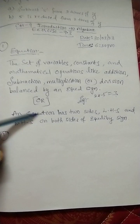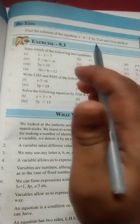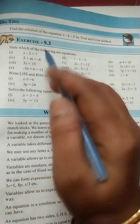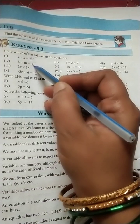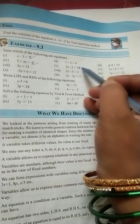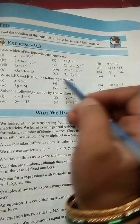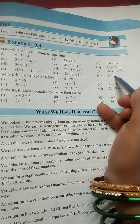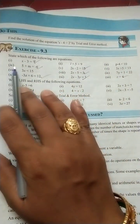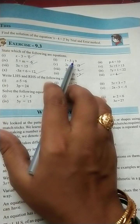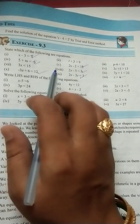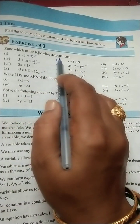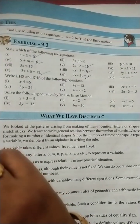Now, which of the following are equations? Check it — whichever contains an equal sign is compulsory an equation. So the ones with equal signs are equations. If it contains a less than or greater than sign, it is not an equation. The word 'equation' itself means equal sign — it must contain an equal sign.